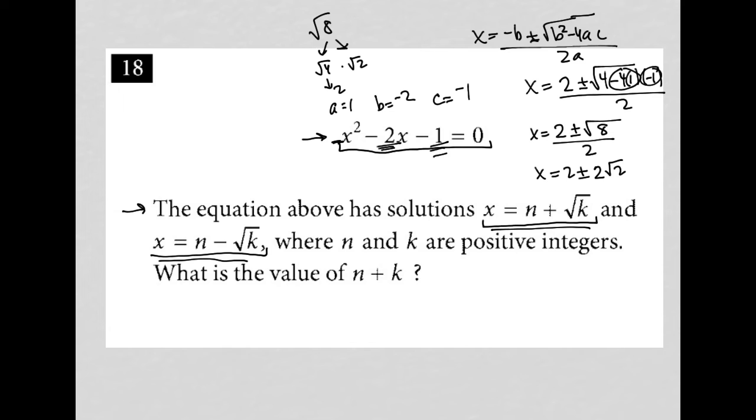Root 4 is 2, and root 2 doesn't simplify further. So I have x equals 2 plus or minus 2 root 2, all over 2.